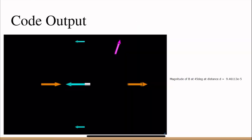This is the output of my code. These arrows represent different magnetic fields, and you can see that the code outputted a magnitude of B at 45 degrees at distance D of 9.46 times 10 to the negative 5 Tesla.